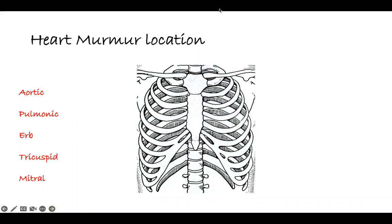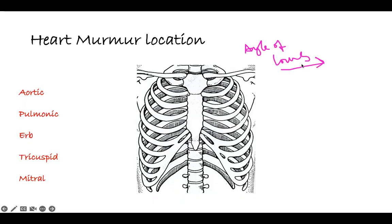The one area I want to add is something they call the Angle of Louis — it's French. The angle of Louis is this joint: this is the manubrium, and this is the sternum, and the joint where they meet is the Angle of Louis. If they show it on a diagram, that's the Angle of Louis — it's the connection between the manubrium and the sternum together.